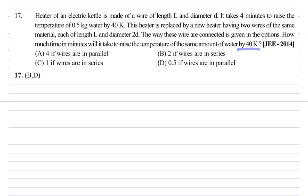If we have diameter 2d, it means that diameter is 2d, so the area of cross section is four times, and resistance is one by four times.